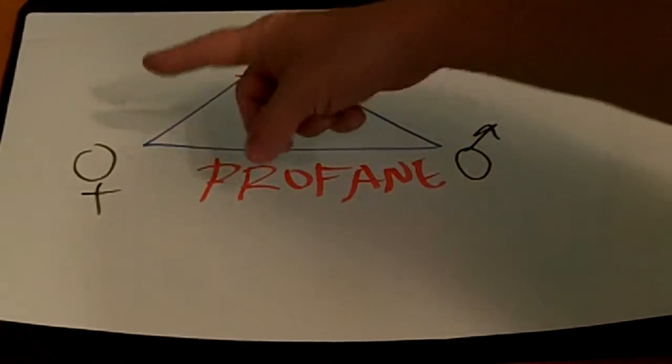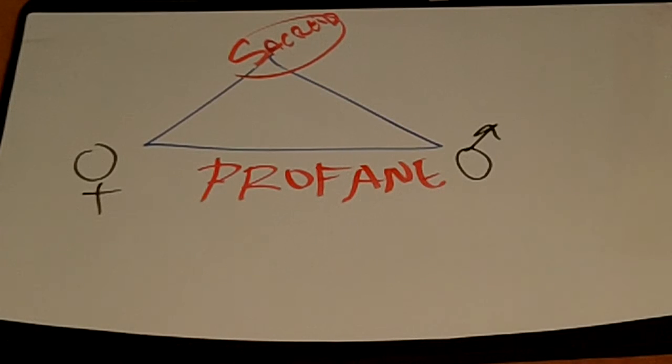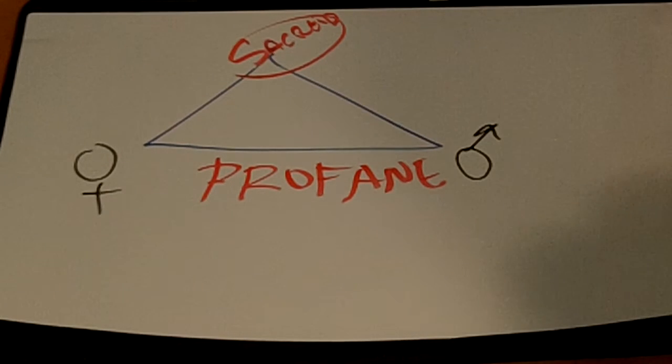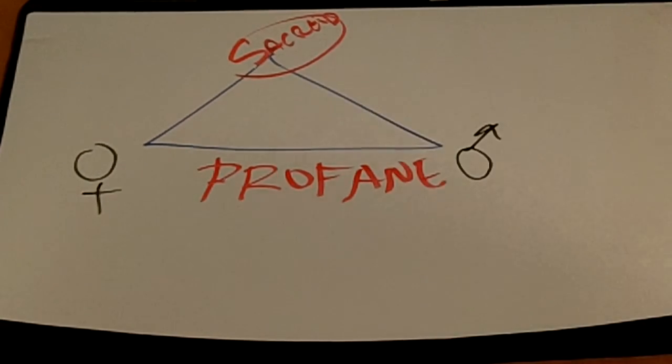So here we have our sacred and profane triangle. We could extend that, but really that's the most obvious, and I wanted to point this out as being Waite's penchant for triangles. I'm going to pause this, erase the board, and I'll have some more for you in just a moment.